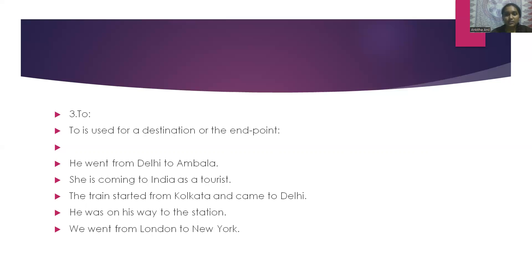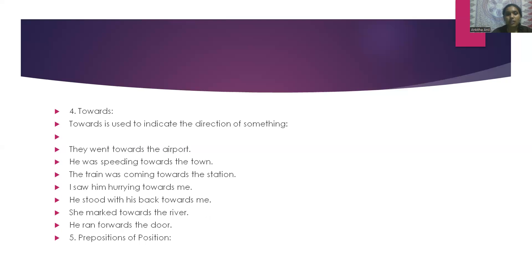The next word is 'to'. To is used for a destination or the end point. For example: he went from Delhi to Ambala. She is coming to India as a tourist. The train started from Kolkata and came to Delhi. The next word is 'towards'. Towards is used to indicate the direction of something. For example: they went towards the airport. He was speeding towards the town. The train was coming towards the station.